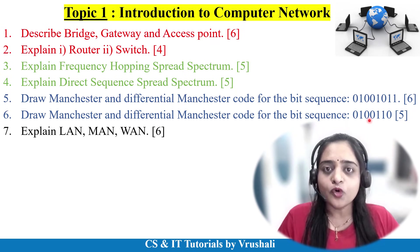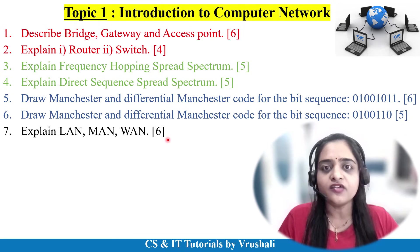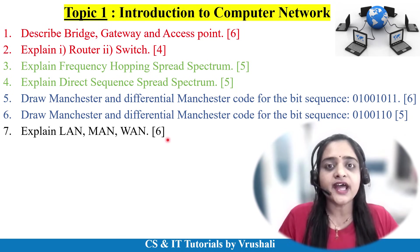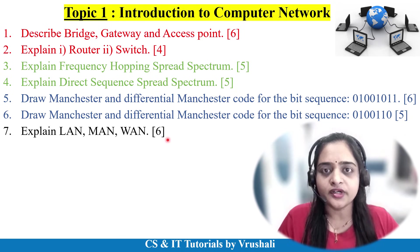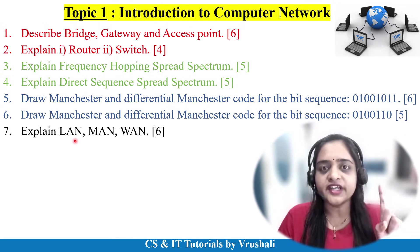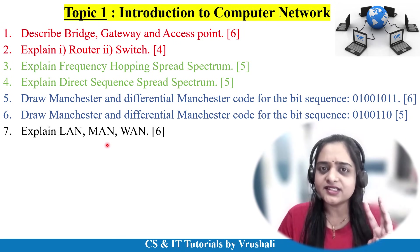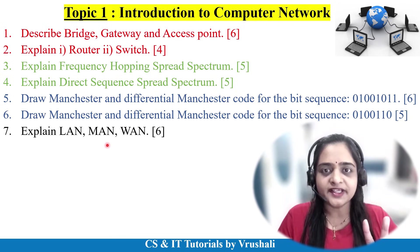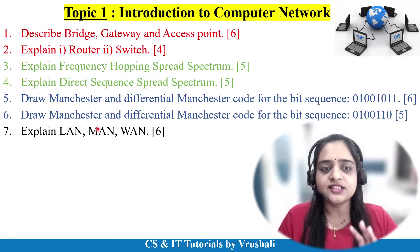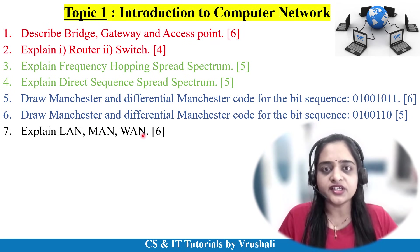An important question is to explain LAN, MAN, and WAN for 6 marks — diagrams are important here. First mention the definition of LAN, then the diagram, a brief explanation, and a real-life example. Do the same for MAN and WAN. This question is generally asked for 6 to 8 marks.